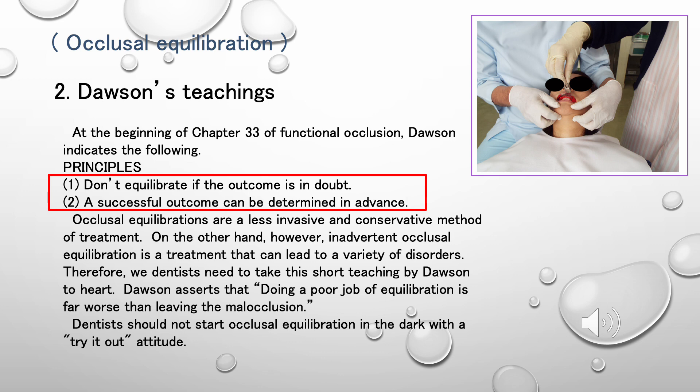Therefore, we dentists need to take this short teaching by Dawson to heart. Dawson asserts that doing a poor job of equilibration is far worse than leaving the malocclusion. Dentists should not start occlusal equilibration in the dark with a 'try it out' attitude.